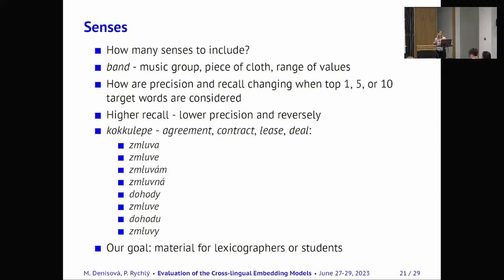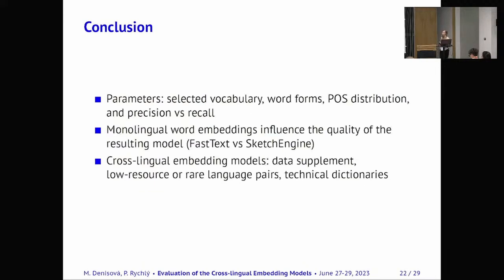And the conclusion, so I mentioned four parameters for the evaluation dataset in this talk. And the conclusion is of course monolingual word embeddings influence the quality of the resulting model. So we could observe that Sketch Engine was of better quality than FastText for example, and it really influences the model.